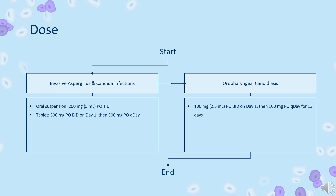For oropharyngeal candidiasis, the oral suspension dose is 100 mg (2.5 ml) twice daily on day 1, then 100 mg once daily for 13 days. For oropharyngeal candidiasis refractory to itraconazole and/or fluconazole, the dose is 400 mg (10 ml) twice daily, with duration based on the severity of the underlying disease and clinical response.